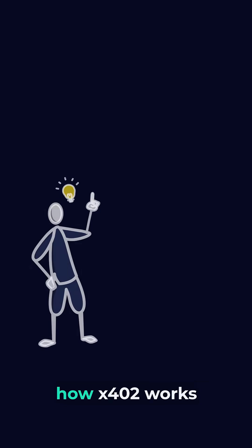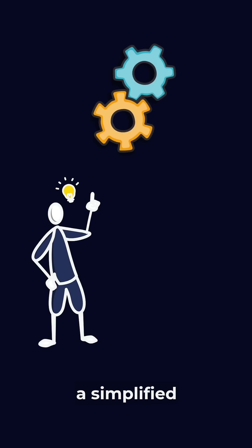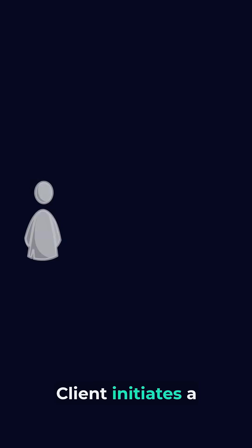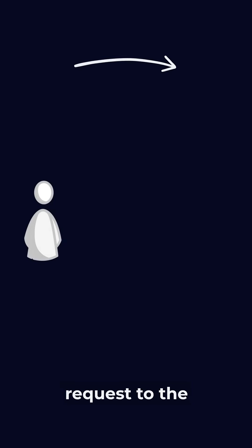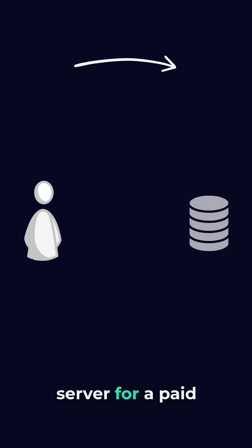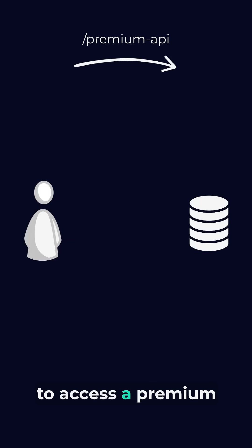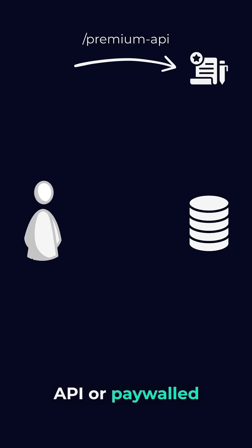To fully understand how X402 works, let's go through a simplified communication flow. The client initiates a request to the server for a paid resource — for example, to access a premium API or paywall content.